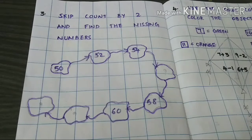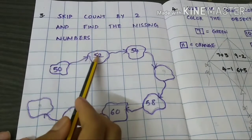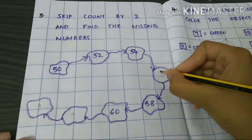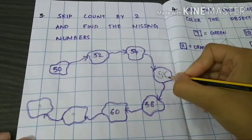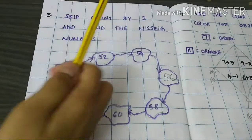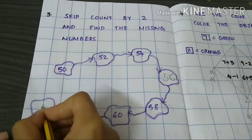Skip count by 2 and find the missing numbers. 50, 52, 54, 56, 58, 60, 62, 64.